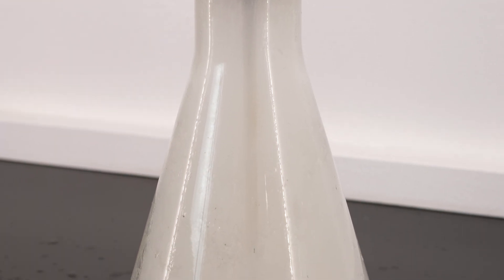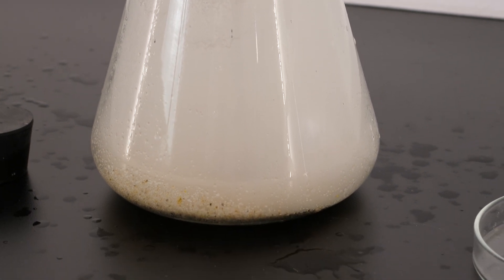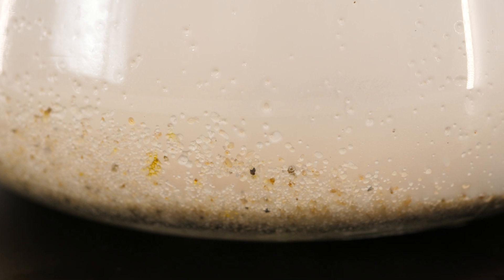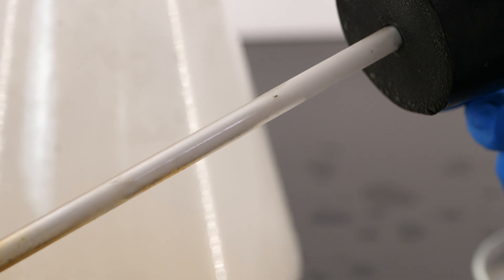Now that the flask has cooled, let's examine the product more closely. As you can see, sodium chloride crystals formed on the inside of the flask and in the glass tube. Through the process of synthesis, sodium and chlorine combined to produce the compound sodium chloride.